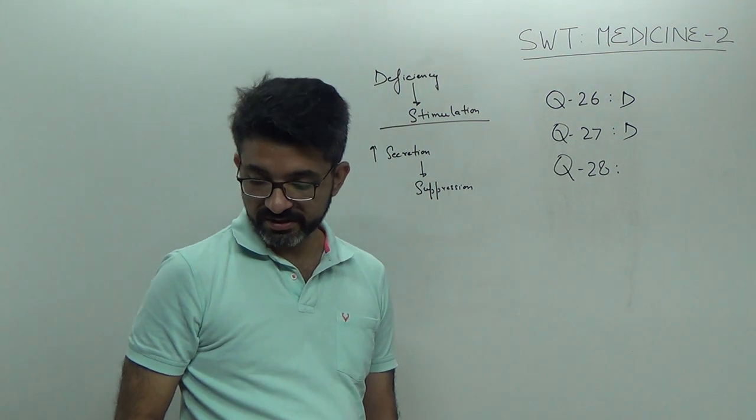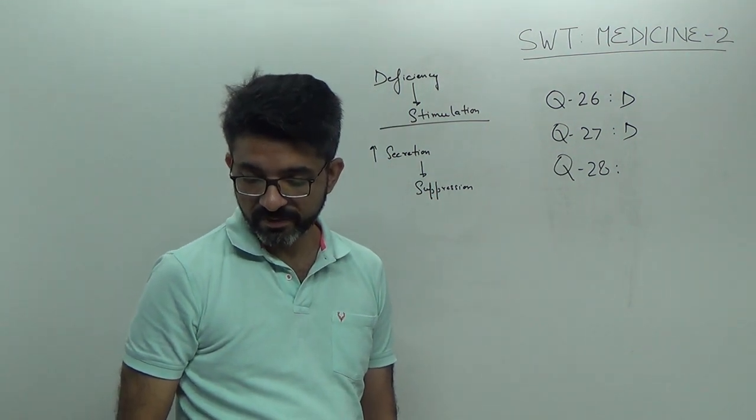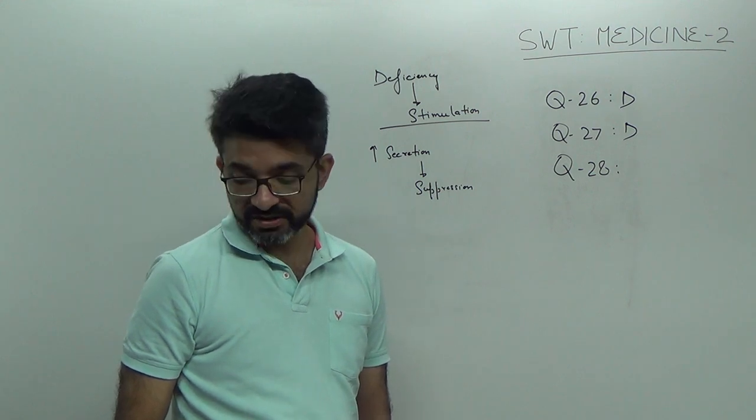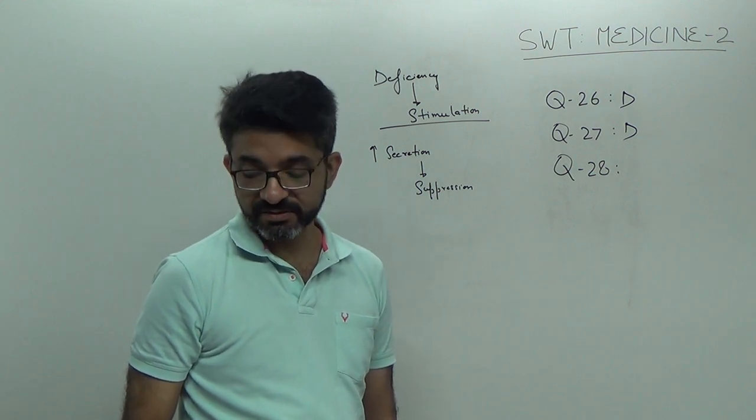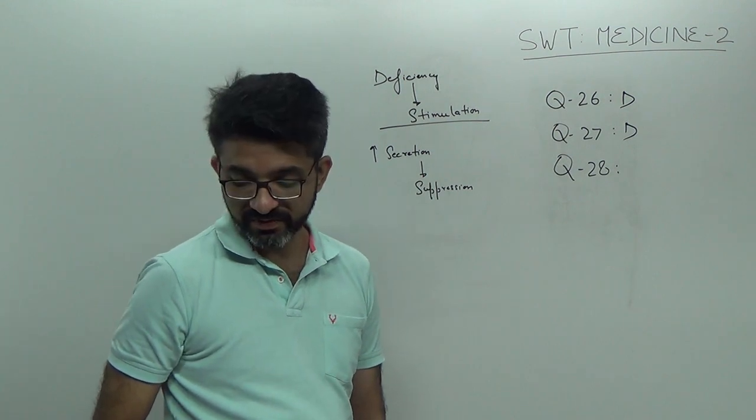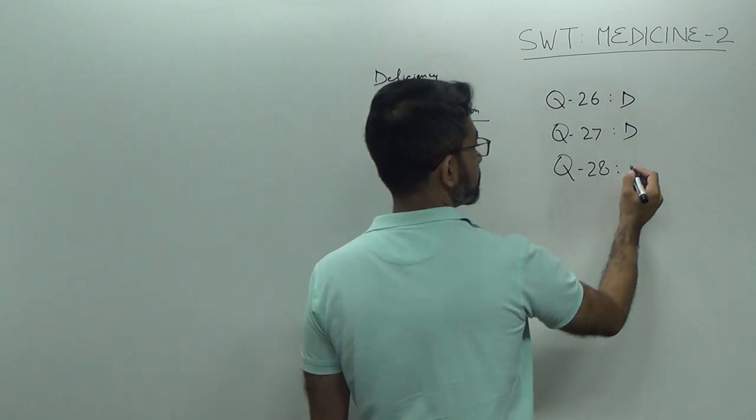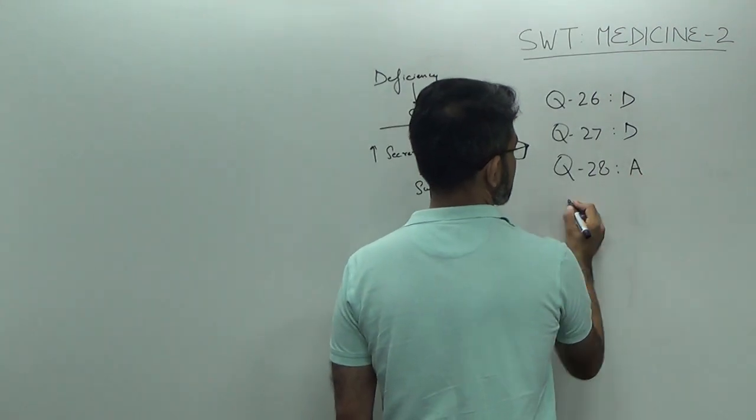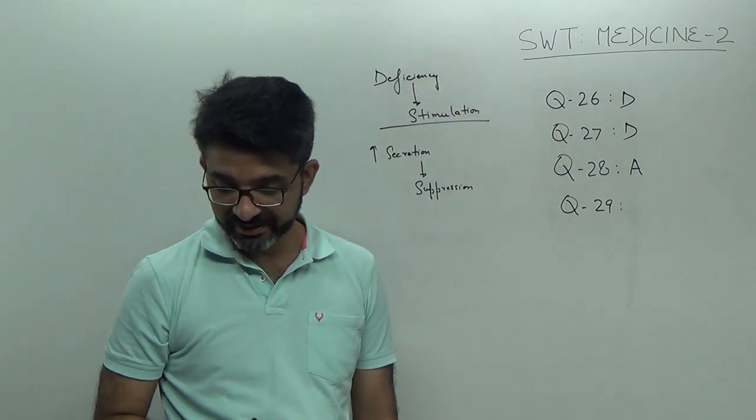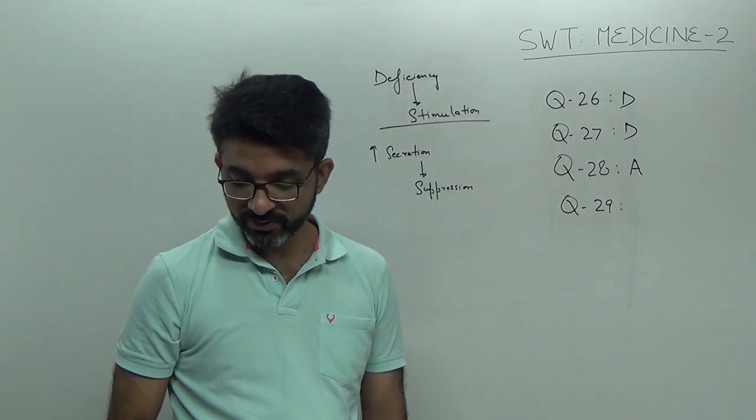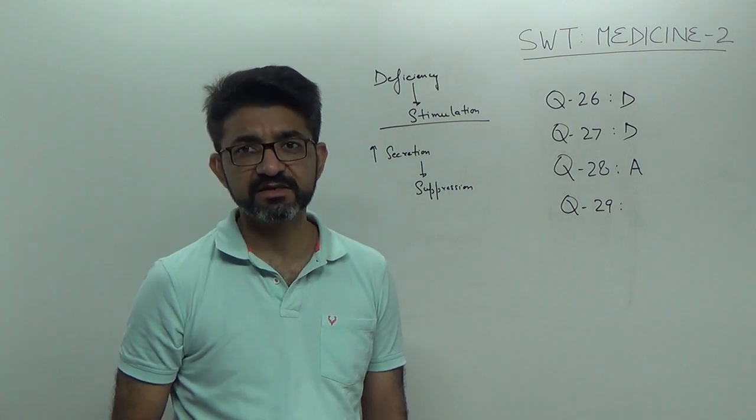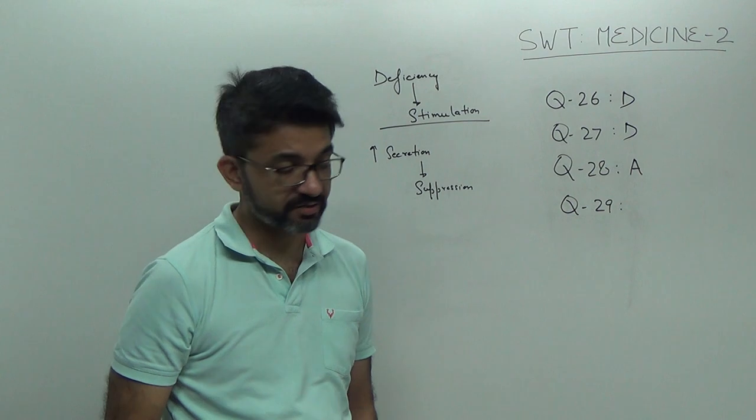Question number 28. Edema of feet is not a feature of Cushing syndrome. So, that is, congestive heart failure can cause pedal edema. Hypothyroidism can cause pedal edema. So, answer is Cushing syndrome. Question number 29. Clinical features of pheochromocytoma. Obviously, low cortisol levels is a feature of Addison's disease, not pheochromocytoma. So, answer is C.